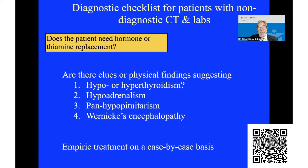Finally, are there clues in the history, physical findings, or past history of thyroid disease or adrenal disease? Pan-hypopituitarism would affect both those endocrine organs. And think about Wernicke's encephalopathy — thiamine is very safe to give intravenously, and you want to treat early so the patient doesn't develop long-term Korsakoff psychosis. Treatment is on a case-by-case basis.